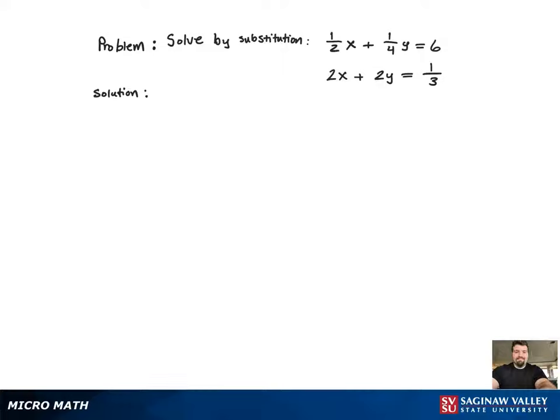The goal of the substitution method is to take one equation and solve for one of the variables. So in our situation, we're just going to take the second equation and solve for x.